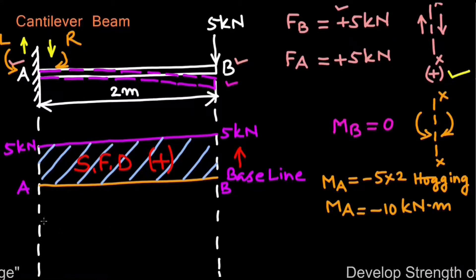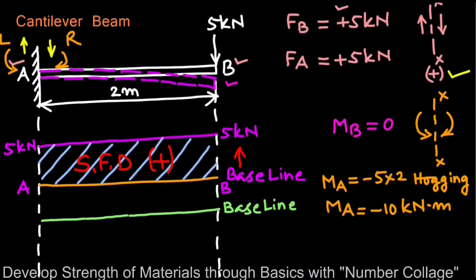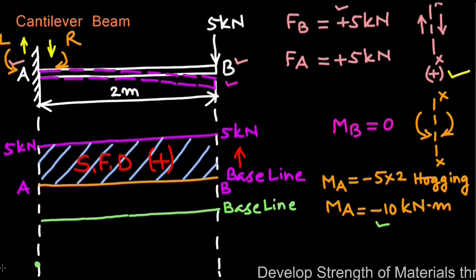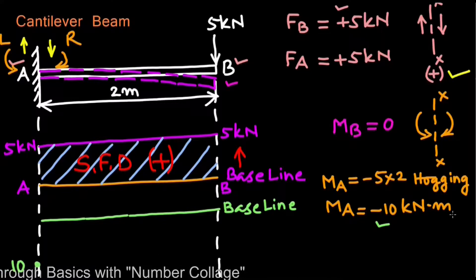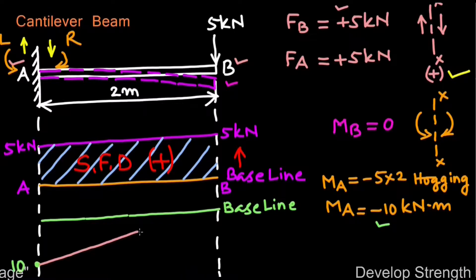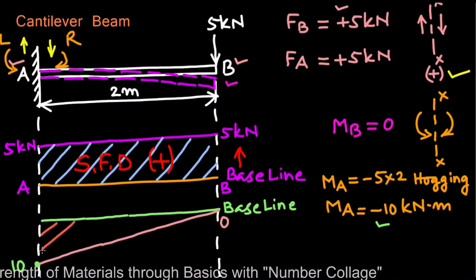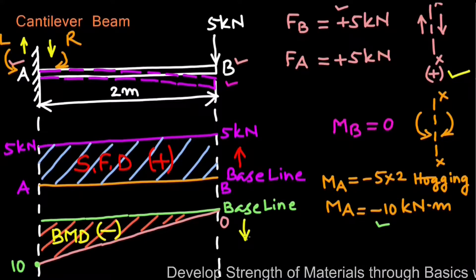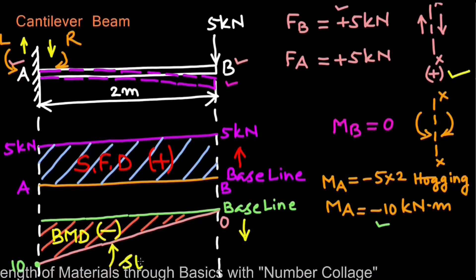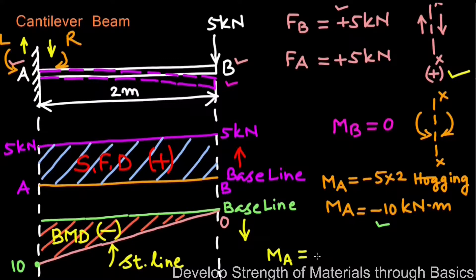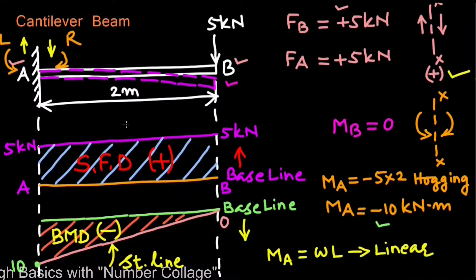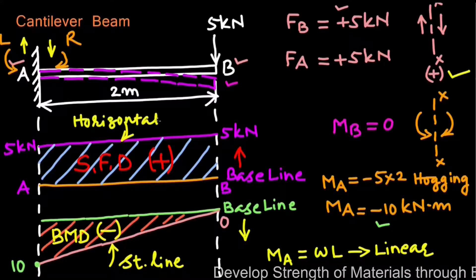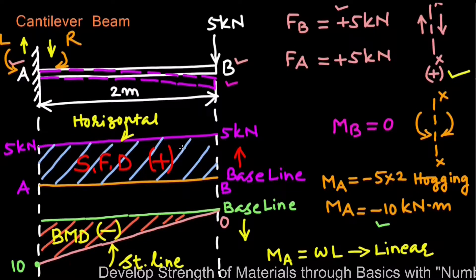To draw the bending moment diagram, we first draw the baseline. Since the bending moment is negative, we start from a point below the baseline at magnitude 10 kN·m at point A, which reduces gradually towards point B and becomes 0. The resulting triangle is the bending moment diagram, negative in nature because it is plotted below the baseline. The bending moment curve is a straight line because MA = WL is linear.